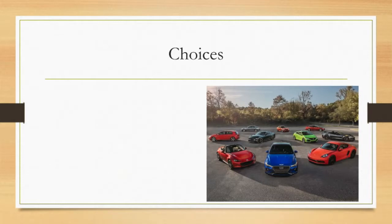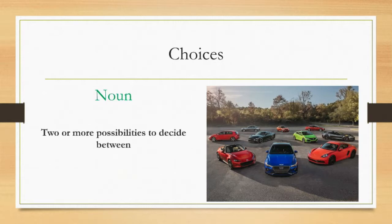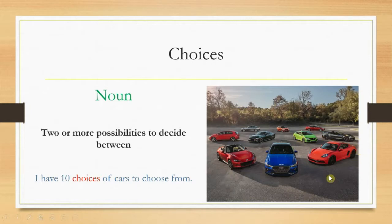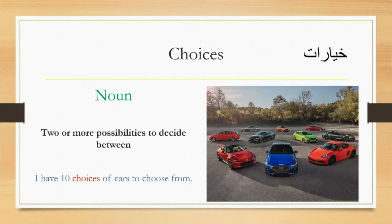Choices. We learned previously that choose is a verb, but choices is a noun. It means two or more possibilities to decide between. For example, I have ten choices — ten choices of cars to choose from — meaning I can only choose one from all of these ten choices. In Arabic we say khayarat.